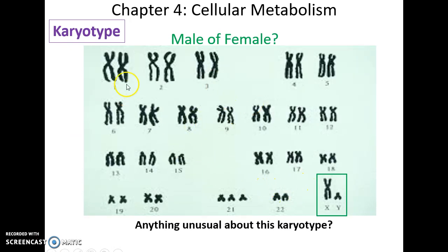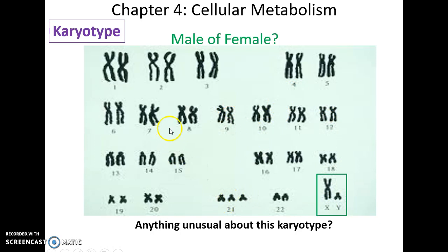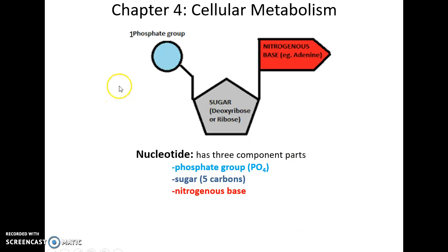Here's a karyotype showing all 46 chromosomes in a human. This particular one is a male because it has an X and a Y chromosome, and it's an unusual karyotype because there are actually three copies of chromosome 21 — so this is someone with Down syndrome. A nucleotide consists of a phosphate group, a 5-carbon sugar, and a nitrogenous base.